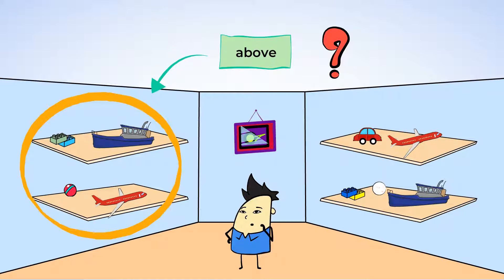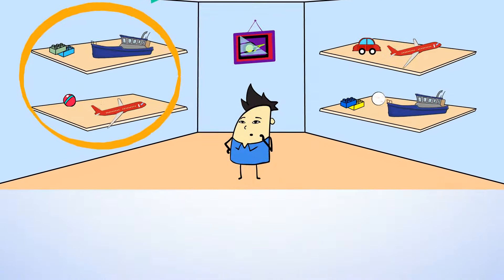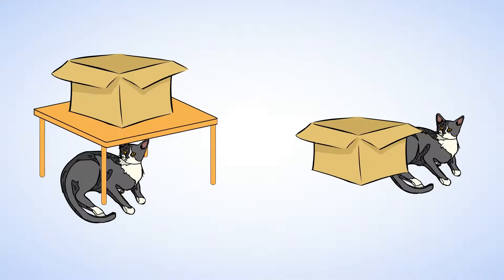Well, that's a bit unusual. In real life, planes are usually above boats. Now, which picture shows the cat sitting below a box? That's right, this one does. The cat is under the box. And so, he's sitting below the box. Great job!